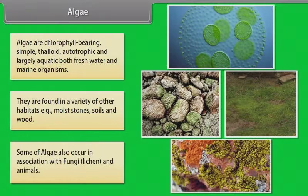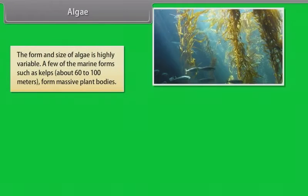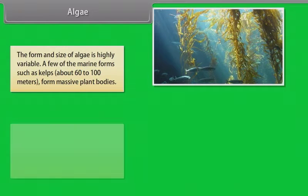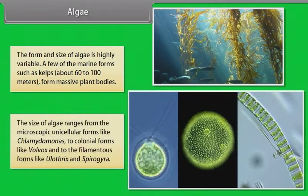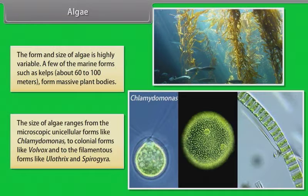Some of algae also occur in association with fungi, lichen and animals. The form and size of algae is highly variable. A few of the marine forms such as kelps about 60 to 100 meters form massive plant bodies. The size of algae ranges from the microscopic unicellular forms like Chlamydomonas to colonial forms like Volvox and to the filamentous forms like Ulothrix and Spirogyra.